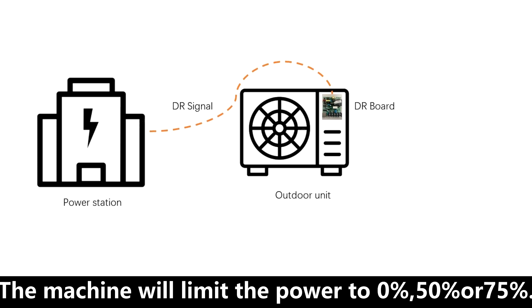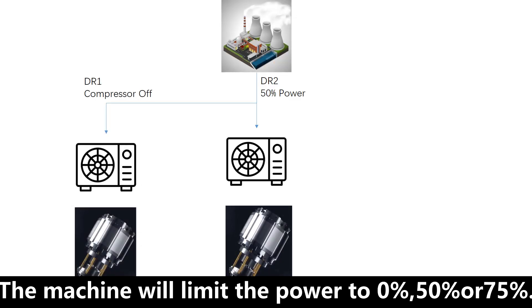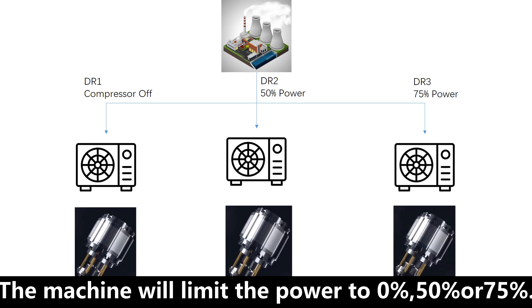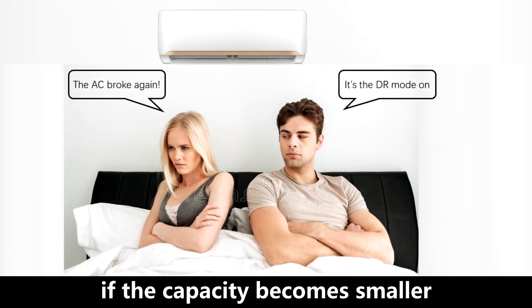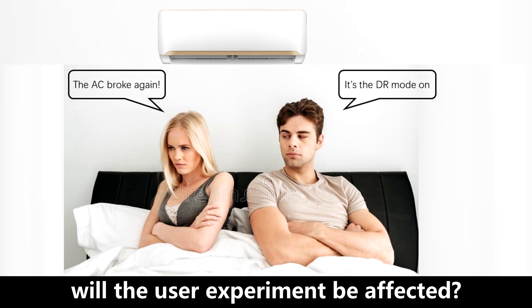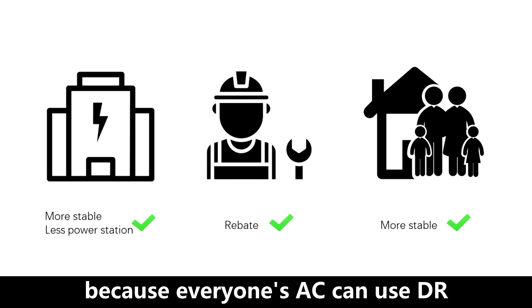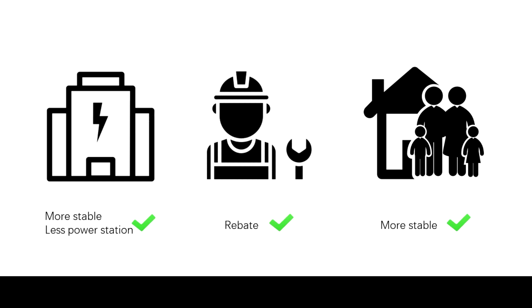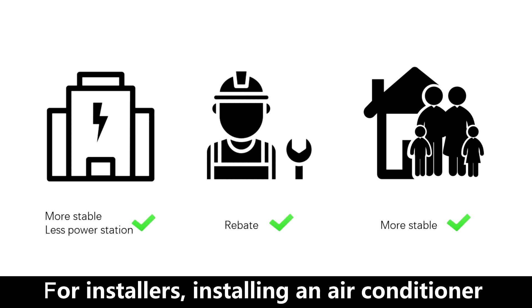The machine will limit the power to 0%, 50%, or 75%. But some people may ask: if the capacity becomes smaller, will the user experience be affected? In fact, for users, because everyone's AC can use DR, the air conditioner can continue to run during the peak period of power consumption.